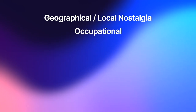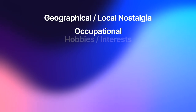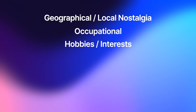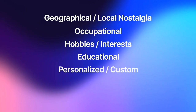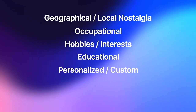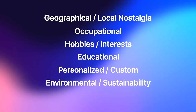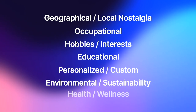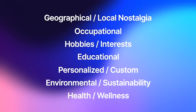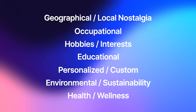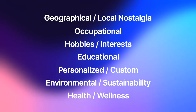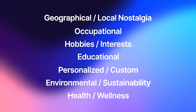Next is occupational — designs specific to certain jobs or industries. Third is hobbies and interests: designs specific to certain sports or activities. Fourth is educational: designs related to certain subjects or degrees. Fifth is personalized and custom designs, which are always going to sell well because they are specific — things like names and monograms. Sixth is environmental and sustainability themed niches. There is a huge push for this all over the world, so I don't think this niche is going away anytime soon. And last is health and wellness themes. The overall niche may be saturated, but sub-niches like mental health and self-care are great to design around. I highly recommend pausing the video and writing down these seven niches because they have so many hidden sub-niches in them.